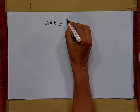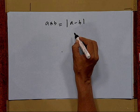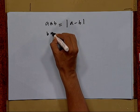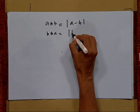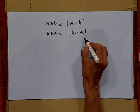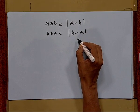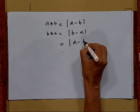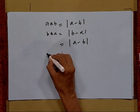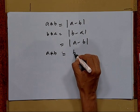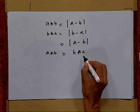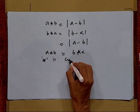First of all, we have to show that star is commutative. We have A star B equals |A minus B|, while B star A equals |B minus A|. Since the modulus operator is symmetrical, |B minus A| equals |A minus B|. Thus A star B equals B star A, which implies star is commutative.